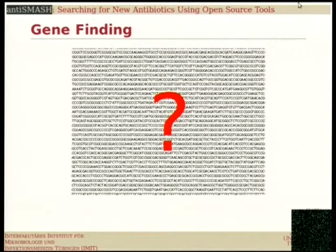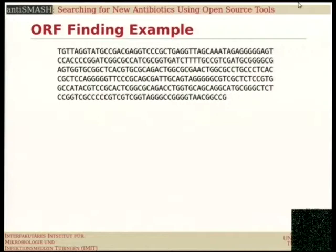Here I have a short sequence — let's find some genes. What we're looking for is ATG, because that also means start. Humans are pretty good at pattern recognition, so with a bit of practice you can do this rather well.